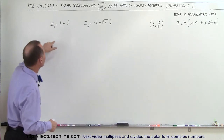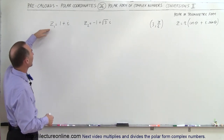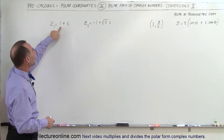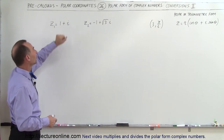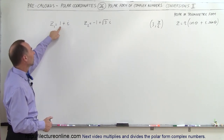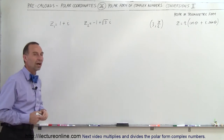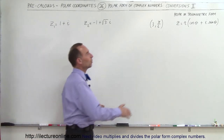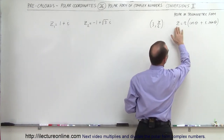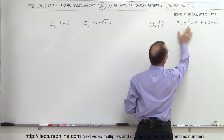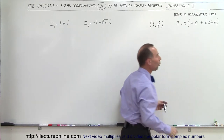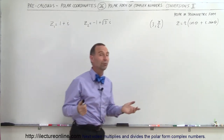Let's start with the complex number z1, which is equal to 1 plus i. The real part is 1 and the imaginary part is i. How do we put this in the form where the complex number is written in what we call the polar or trigonometric form?